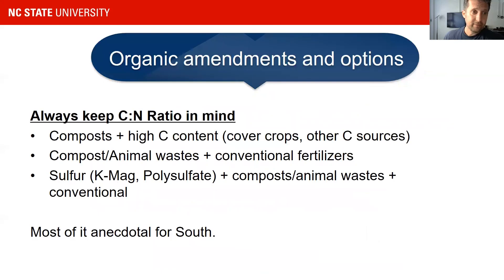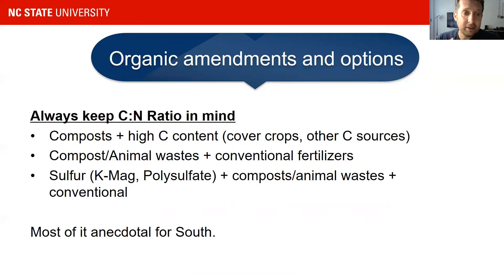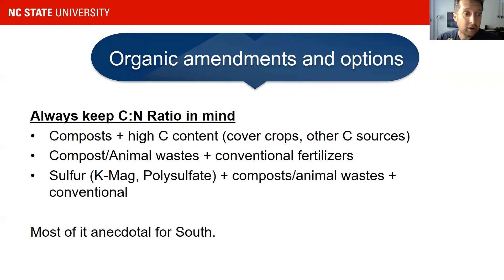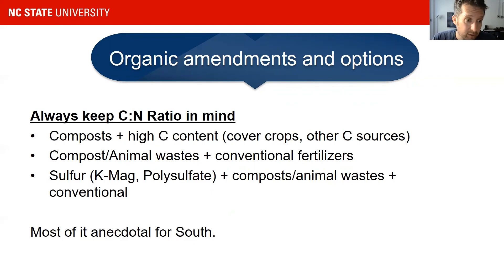That could be reached with organic amendments — and this is just food for thought because there is no research on this for the Southern region. Things like compost and high-carbon components like cover crops can increase the C:N ratio of your soil. Animal-based inputs, compost in combination with conventional fertilizers, and polysulfate to increase sulfur content are all options, though we cannot provide formal recommendations due to lack of research — but there is anecdotal knowledge across the region.